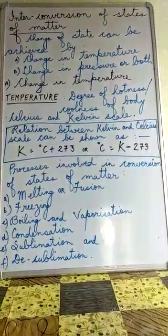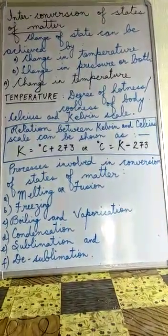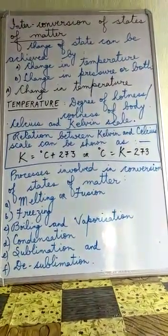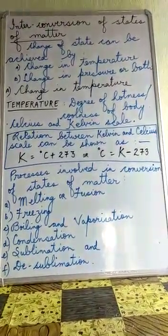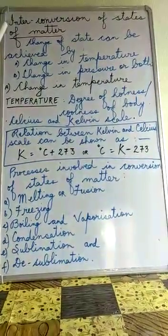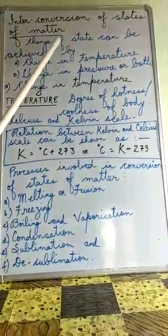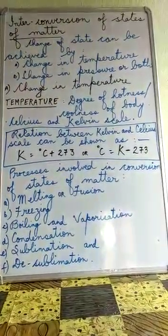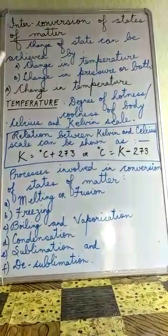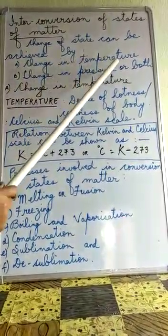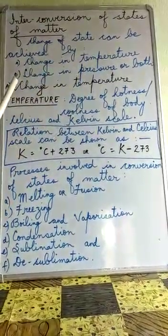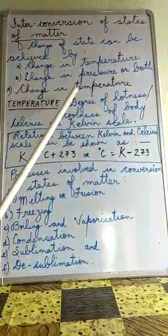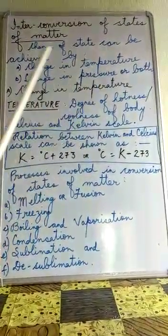When matter changes from one physical state to another, it is known as interconversion of states of matter. Change of state of matter is a physical change and can be achieved by: A. Change in temperature, B. Change in pressure, and C. Change in both temperature and pressure.